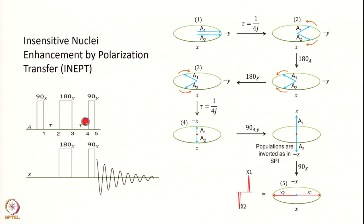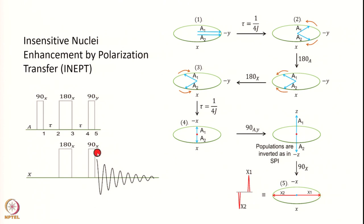Then you wait for the same time τ again. Then you apply a hard 90° pulse along the Y axis to A, and a 90°X pulse to X — importantly this A pulse has to be along Y. Therefore you make this sort of pulse sequence, and you will see that you get a substantial enhancement of the X magnetization, and that is what you detect.